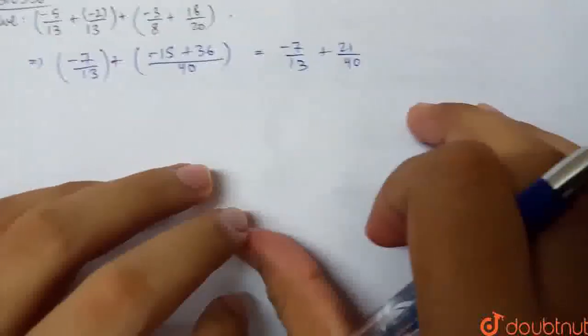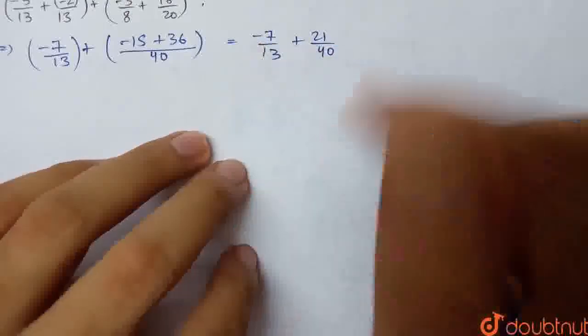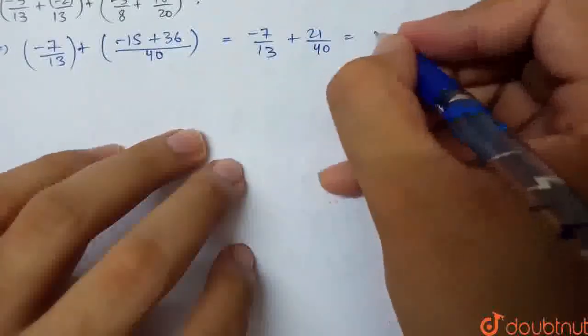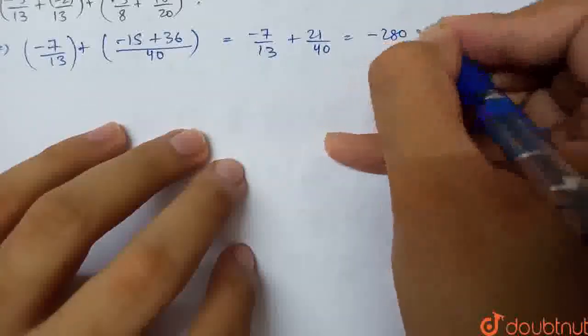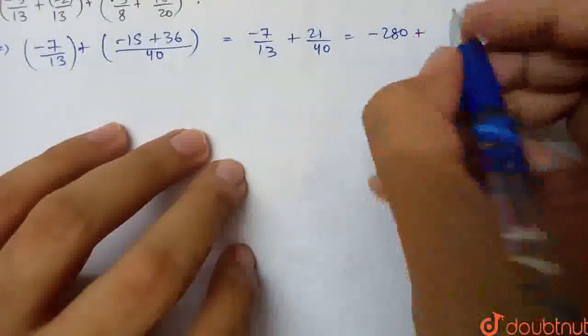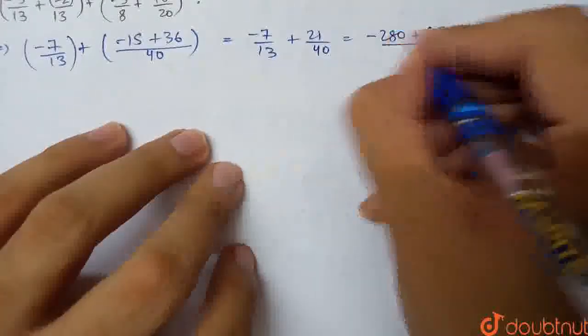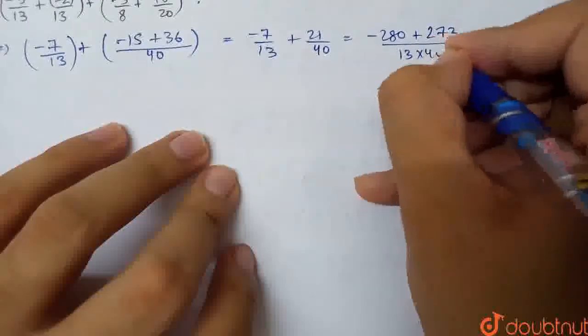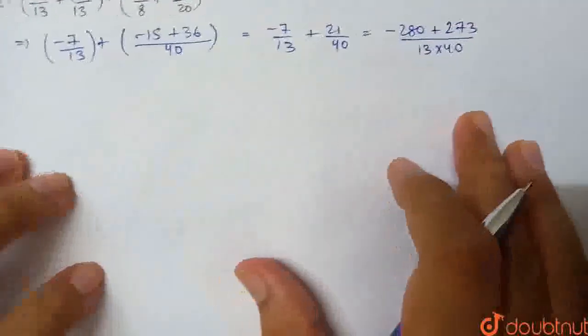We have to cross multiply directly. This is minus 7 into 40, that is minus 280, plus 21 into 13, that is 273, divided by 13 into 40. So, this is our simplified version.